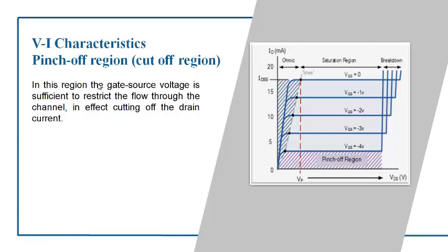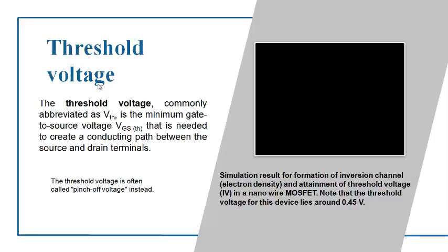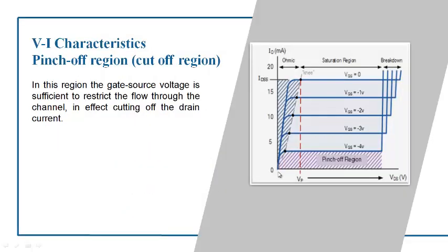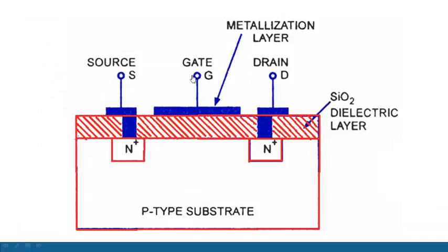VI characteristics is the characteristics between voltage and current — the output characteristics. There are two supplies: one between gate and source, another between drain and source. For a change in VDS, what is the current flowing is called the VI or output characteristics. For a change in VDS there will be a change in drain current ID. This purely depends upon the gate voltage applied — only the gate will decide the current flow, which is why MOSFET is a voltage control device.